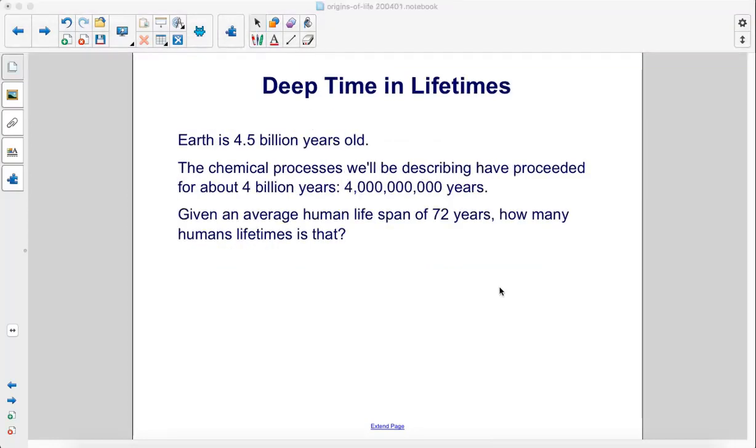Earth is 4.5 billion years old. The chemical processes we'll be describing have proceeded for about 4 billion years. Given an average human lifespan of 72 years, how many humans' lifetimes is that?